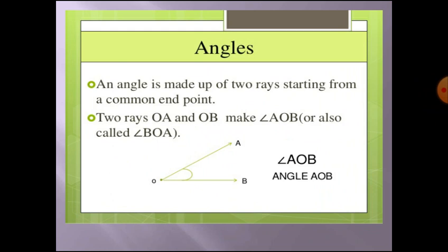An angle is made up of two rays, which start from a common end point. See this figure — it is an example of an angle. This angle is called AOB. Here, O is the common point, and OA and OB are rays.